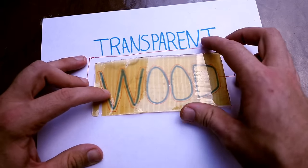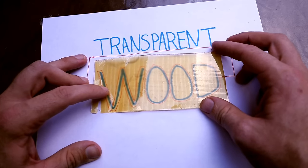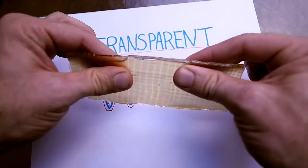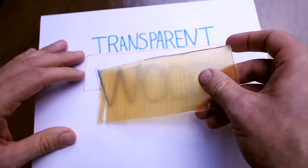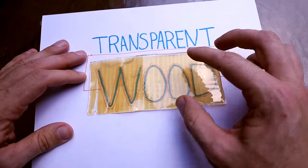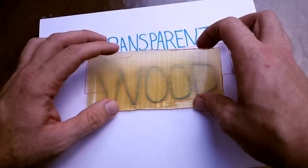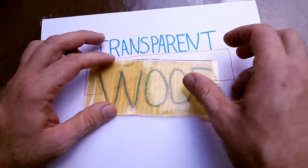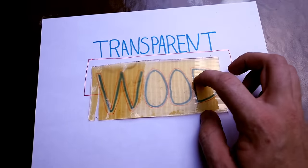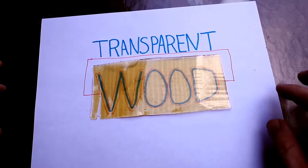They then replace all that non-transparent stuff, the lignin, with epoxy. So this is basically wood that's had some parts of it stripped away and replaced to become kind of cyborg robot wood that's even stronger, and the fun part is that it's transparent.